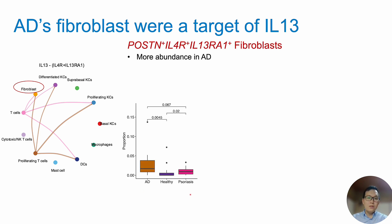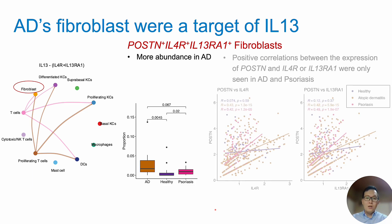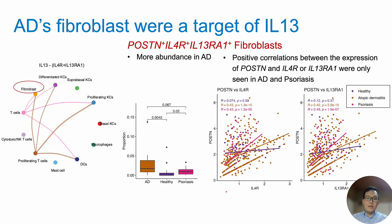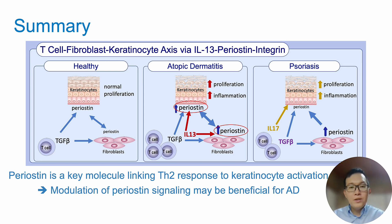Then, we chose to focus on berostin, IL-4R, and IL-13-RA1 triple positive fibroblasts. We noticed that there are a higher number of these cells in AD compared to healthy and psoriasis. Moreover, the correlation between berostin with IL-4R or IL-13-RA1 were only seen in AD and psoriasis.